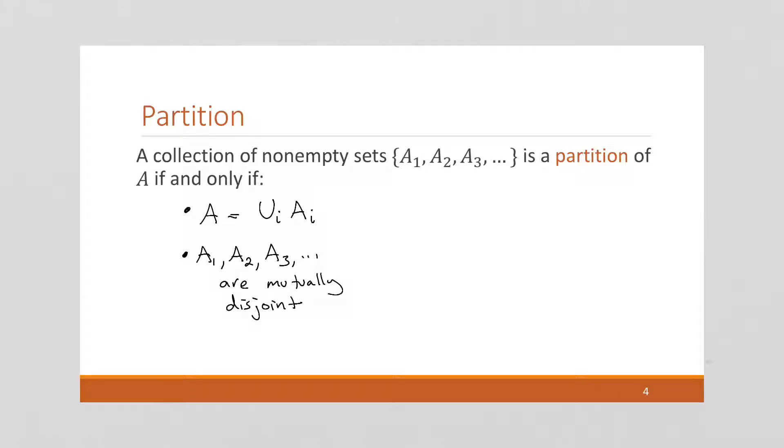So a partition looks kind of like this. If this is set A, we've got this is A1, and that's A2. And this is maybe A2, and this is maybe A3, and so on. So notice that all the sets A1 through A6, when union together give A, that's this first requirement.